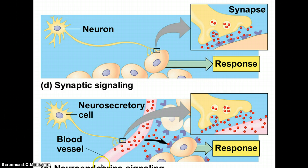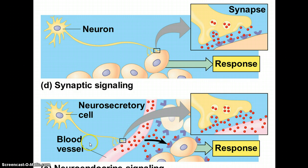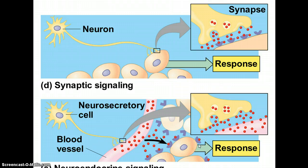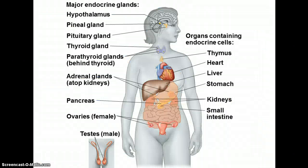We also have neuroendocrine signaling, where up in your brain in the hypothalamus there's a connection between your nervous system and the hormonal system. There are compounds released by these neurosecretory cells that then cause a response, particularly in your pituitary. So that's neuroendocrine signaling.